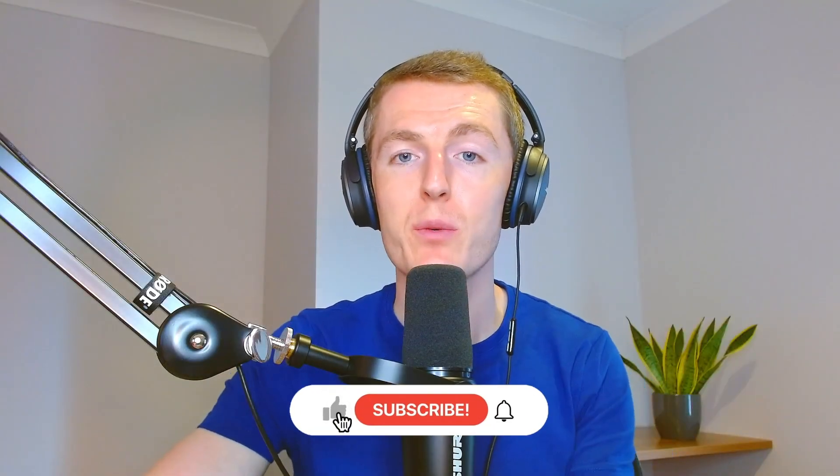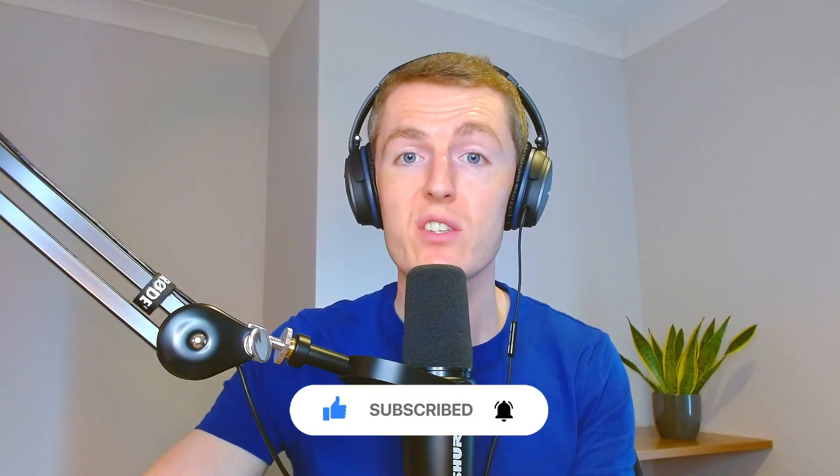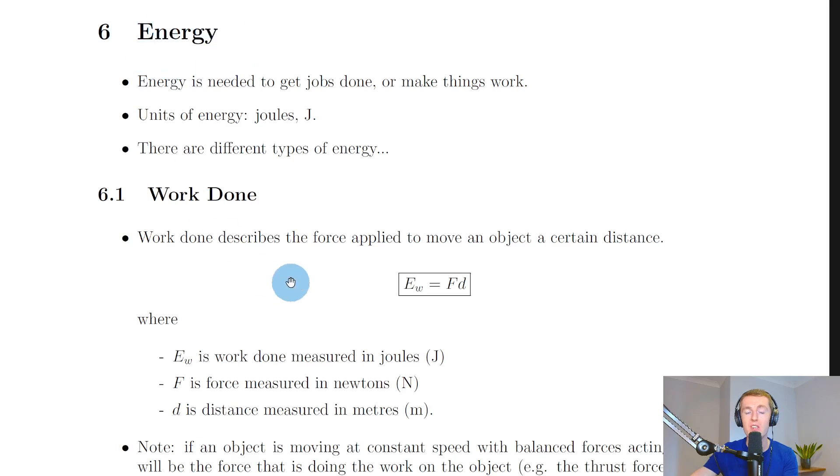Hey folks, welcome back. In this video we're going to look at work done. We're going to kick off the energy section by looking at work done. Energy is needed to get jobs done or make things work. The units of energy are joules with a capital J, and there are different types of energy.